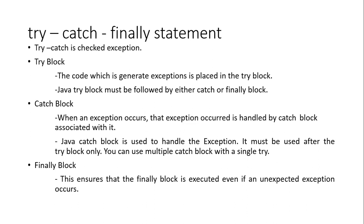When an exception occurs, it is handled by the catch block. The catch block is used to handle the exception, so it must be used after the try block. You can use multiple catch blocks with a single try statement. The finally block ensures it is executed even if an unexpected exception occurs.